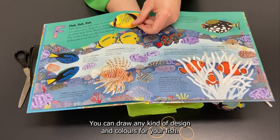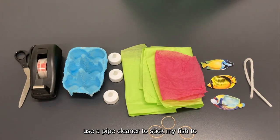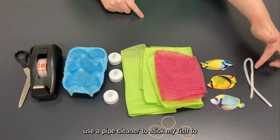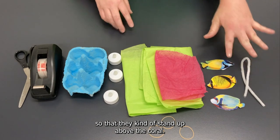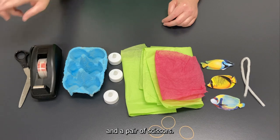You can draw any kind of design and colors for your fish and then I'm going to use a pipe cleaner to stick my fish to so that they kind of stand up above the coral. Now we're also going to need some sticky tape and a pair of scissors.